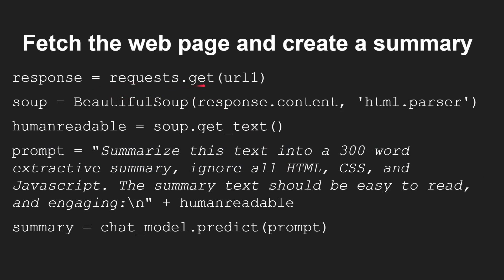Once you've got that, you can ask requests to go and get the web page — URL1, for example. You then use Beautiful Soup to get the human-readable text. Then here's the important thing — you create a prompt which you send to the GPT model: 'Summarize this text into a 300-word extractive summary, ignoring all HTML, CSS, and JavaScript. The summary should be easy to read and engaging.' You can craft your own prompt however you feel best. Notice the 'plus human_readable' — that's the part that appends the actual web page content after a colon and newline, telling the GPT model what text to work on. You run that, get back the summary in a variable, and if you do this three times you end up with summary one, summary two, summary three.